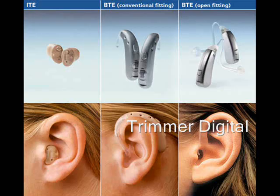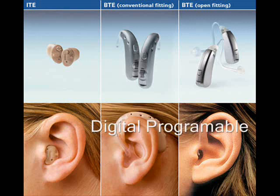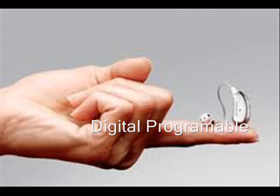Digitally programmable hearing aids are the most useful devices, which can be programmed based on the loss of the individual. There are different types available: behind-the-ear, in-the-ear, in-the-canal, and completely-in-the-canal hearing aids.